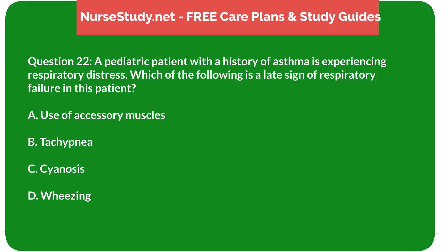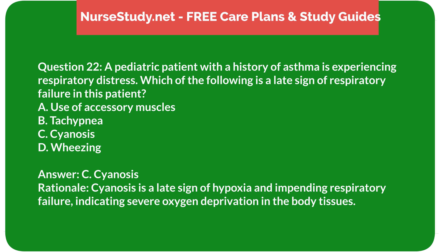Question 22: A pediatric patient with a history of asthma is experiencing respiratory distress. Which of the following is a late sign of respiratory failure? A) use of accessory muscles, B) tachycardia, C) cyanosis, D) nasal flaring. Answer: C) cyanosis. Rationale: Cyanosis is a late sign of hypoxia and impending respiratory failure, indicating severe oxygen deprivation in the body tissues.